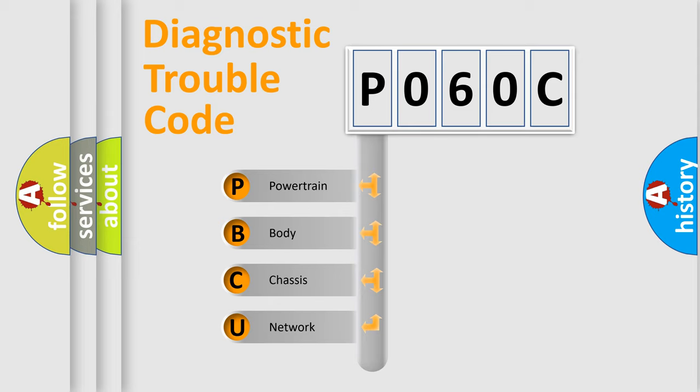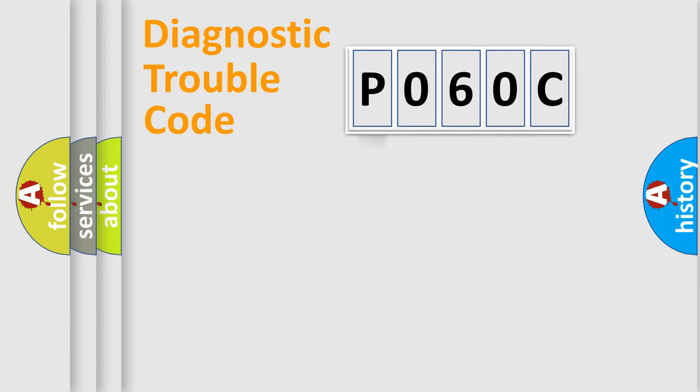We divide the electric system of automobile into four basic units: Powertrain, Body, Chassis, and Network. This distribution is defined in the first character code.